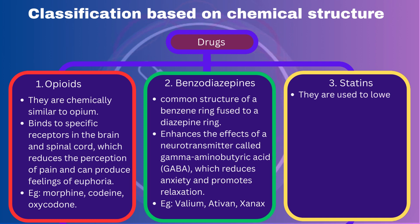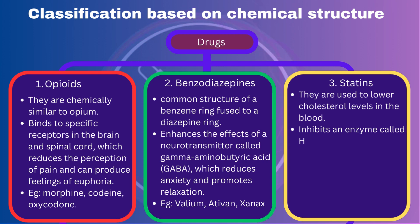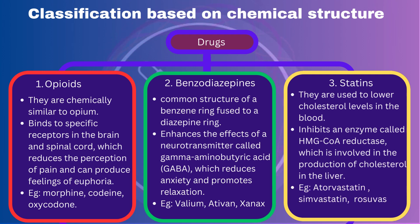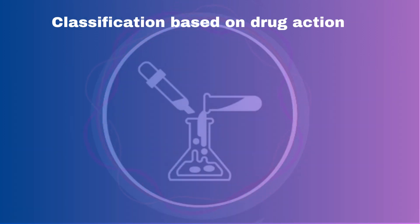Statins: They are used to lower cholesterol levels in the blood. Statins inhibit an enzyme called hydroxymethylglutaryl coenzyme A reductase, which is involved in the production of cholesterol in the liver. They include drugs such as atorvastatin, simvastatin, and rosuvastatin.